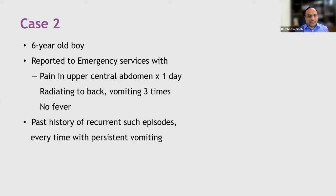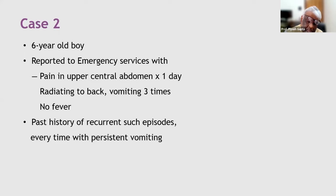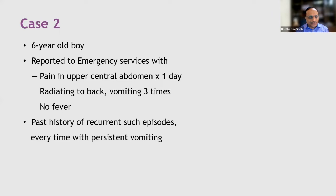A six-year-old boy reported to emergency services with pain in the upper central abdomen radiating to the back. It has happened for one day, associated with three to four episodes of vomiting. During the episodes, the child holds the abdomen and those cause him to curl in bed. Vomiting is non-bilious, there is no fever. On detailed history, the child has recurrent episodes of such abdominal pain with persistent vomiting. The first question is: is it organic or functional abdominal pain?